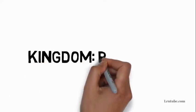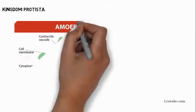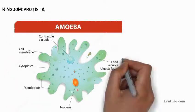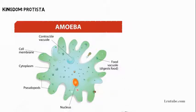Kingdom Protista is one of the five kingdoms in the classification of living things. Before we get into this video, it is advisable to watch our previous video on the classification of living things, as some terms here have been explained there. That video also talks about binomial nomenclature. If you are only looking for Kingdom Protista, then this video is for you.